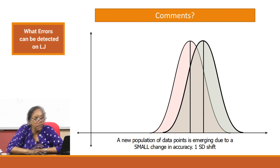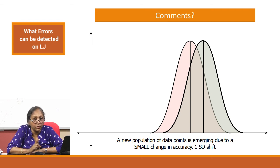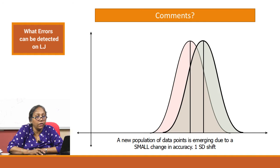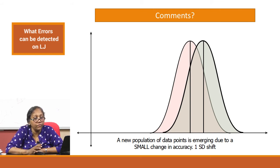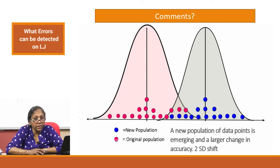If you transpose the first LJ onto a Gaussian, you see a shift to the positive side — a small shift, but a new emerging population of data points is visible. If you transpose the second LJ onto a Gaussian, you see that the Gaussian has shifted entirely to one side — a new population is emerging from the original population, indicating a change in accuracy.